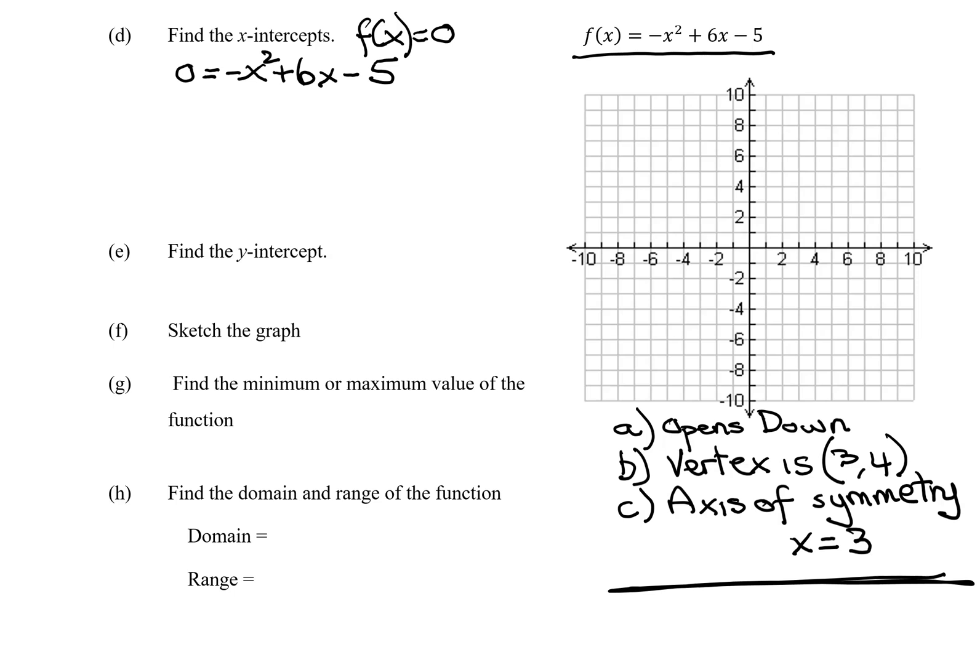But I do not like to factor when my x squared is negative. So what I'm going to do is I'm going to multiply both sides of this equation by negative 1. And so I'm going to get negative 1 times 0 is 0. And when I multiply the right-hand side by negative 1, it is just going to reverse all my signs. So instead of negative x squared plus 6x minus 5, I get positive x squared minus 6x plus 5.